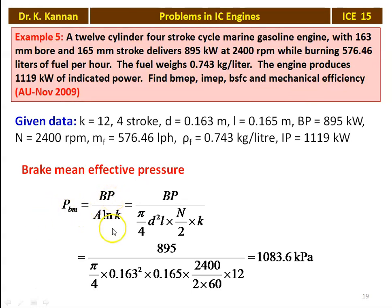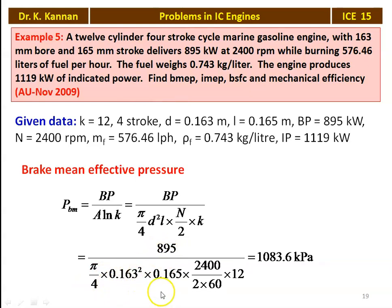Brake mean effective pressure = brake power divided by A·L·N·K, where A is the area, L is the stroke length, N is the number of explosions per second, and K is the number of cylinders. For a 4-stroke cycle engine, small n = N/2. Substituting: 895 kW divided by (π/4 × 0.163² × 0.165 × (2400/(2×60)) × 12) = 1083.6 kPa.